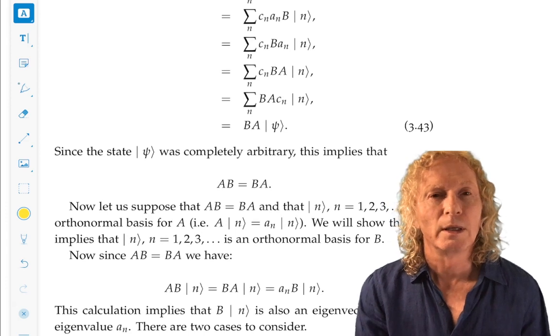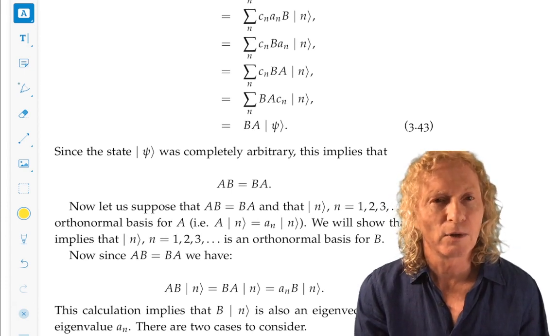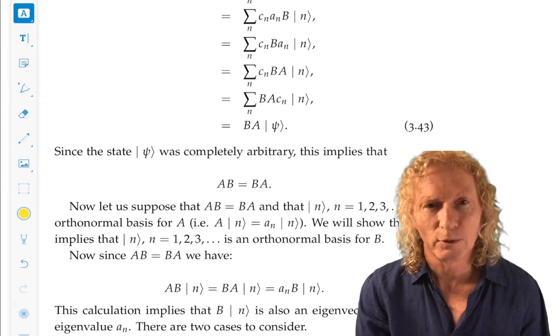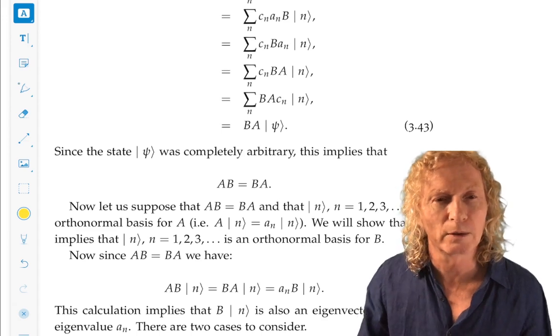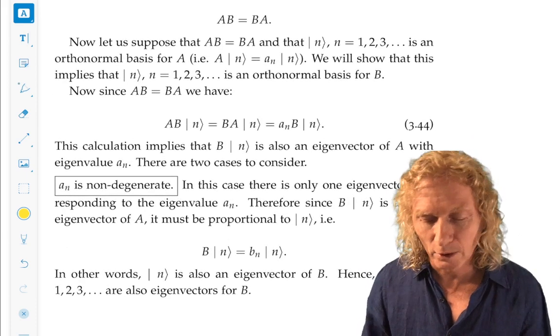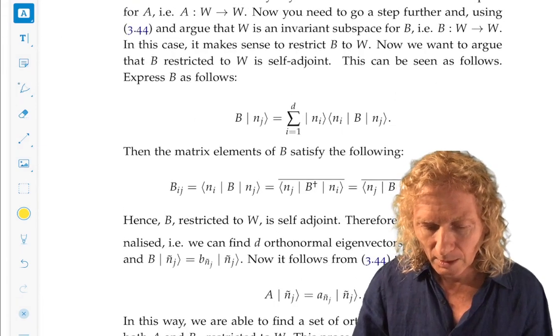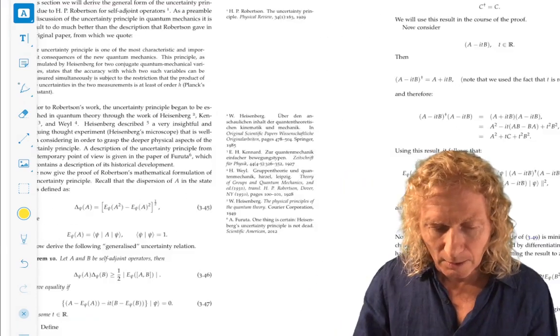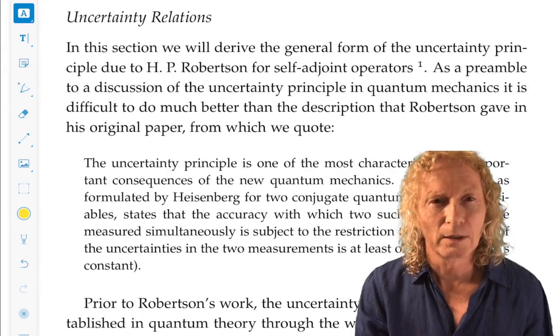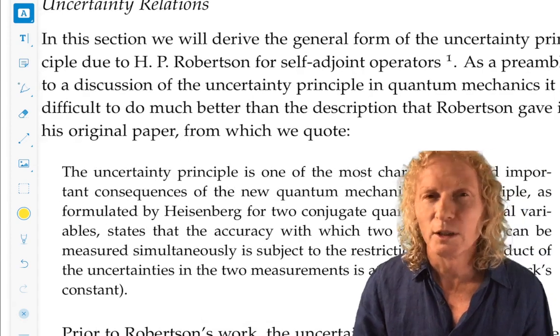Now, suppose that A and B commute. Then the idea is to construct a set of eigenvectors. We know A individually has an orthonormal basis, and B individually has an orthonormal basis. But we want to construct things so that they're the same. That's a bit detailed. We start with a non-degenerate case first, then we go to the degenerate case. As usual, the non-degenerate case is not too difficult. The degenerate case is a bit involved. I don't want to go for the details. It's not the type of theorem that I would examine you on the proof. But we're going to use it quite a bit.